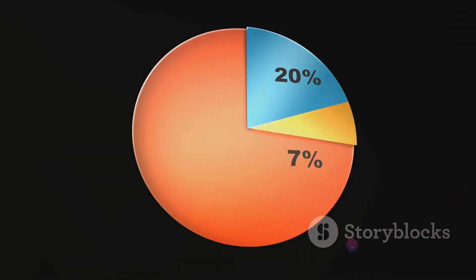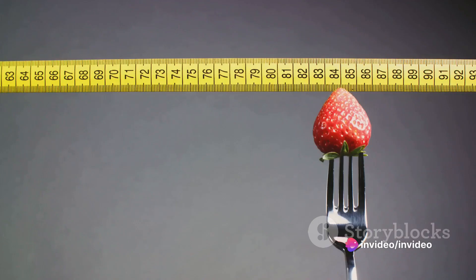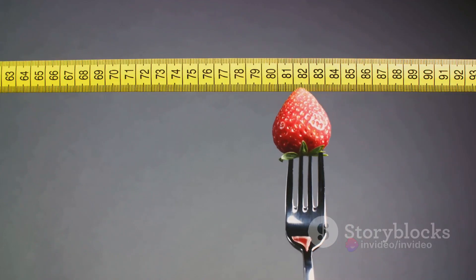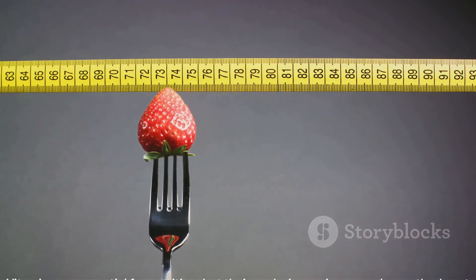Last but not least, the carbohydrate content is determined by difference. This means that once you've calculated the percentages of water, protein, fat, and ash, you subtract these from 100. The result gives you the carbohydrate content.